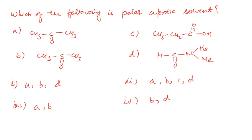In this question you have been asked which of the following is a polar aprotic solvent. Option A: CH3COCH3 (acetone). Option B: CH3SOCH3 (DMSO). Option C: CH3CH2COOH (propanoic acid). Option D: HCON(CH3)2 (DMF). Take one minute. The answer will be option A, B, or D — that is the first option.